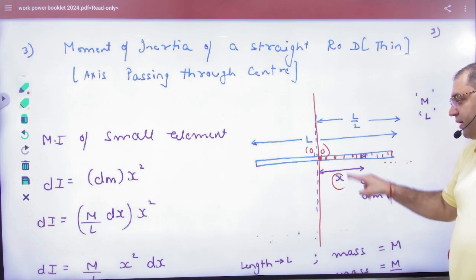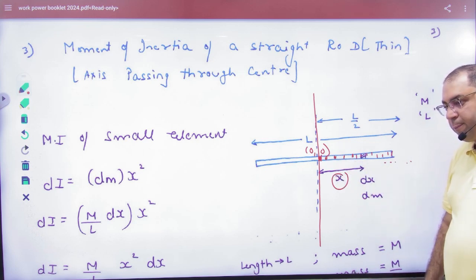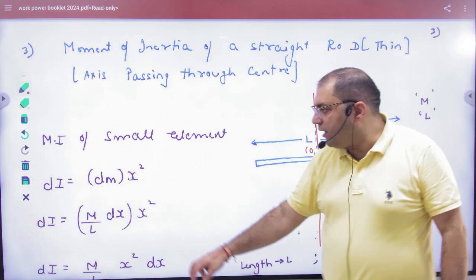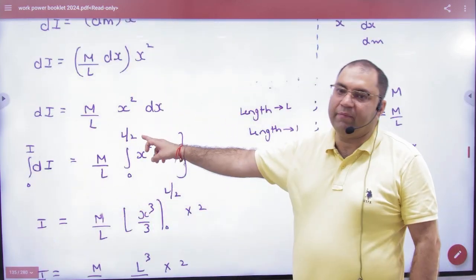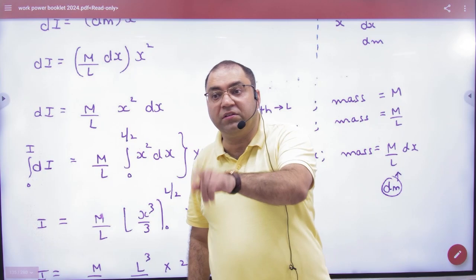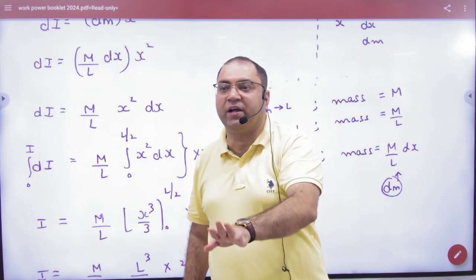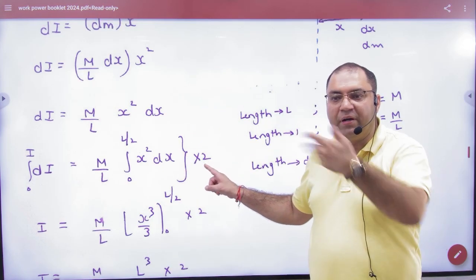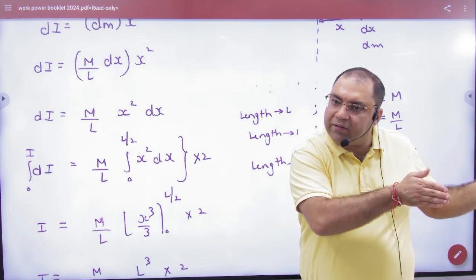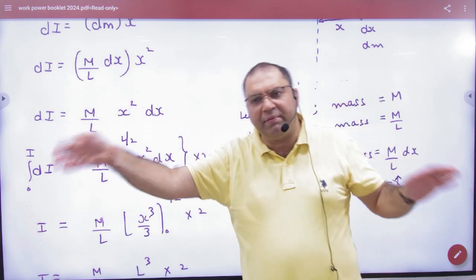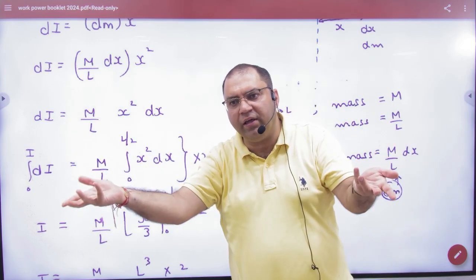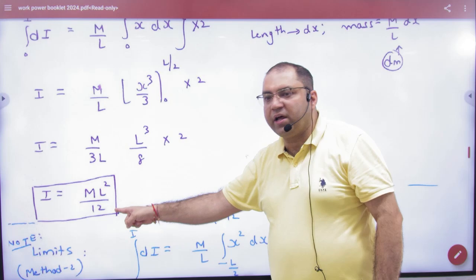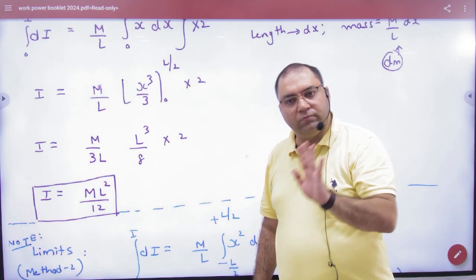So when the first element is here, what will x's limit be? 0. And when it's here, what will x's limit be? L by 2. So when I was applying limits, I applied 0 to L by 2. Then someone said, sir, 0 to L by 2? Left hand side will also be the same - no tension. It's symmetric. Multiply by 2. Integrate this, put the limit, answer will come: ML square by 12. Clear?